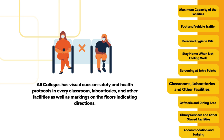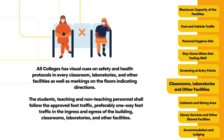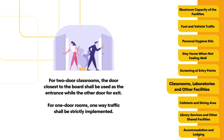All colleges shall post visual cues on safety and health protocols in every classroom, laboratory, and other facility, as well as floor markings indicating directions. Students, teaching, and non-teaching personnel shall follow the approved foot traffic, preferably one-way, in the ingress and egress of buildings, classrooms, laboratories, and other facilities. For two-door rooms, the door closest to the board shall be used as the entrance while the other door serves as the exit. For one-door rooms, one-way traffic shall be strictly implemented.